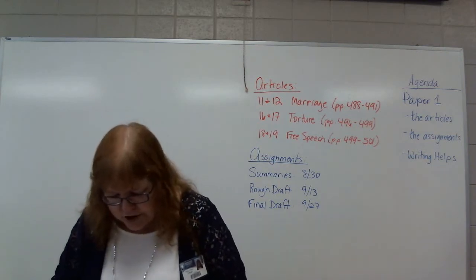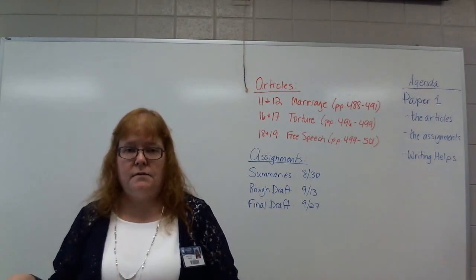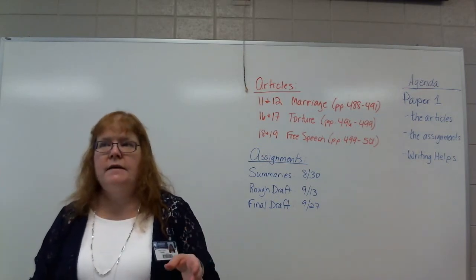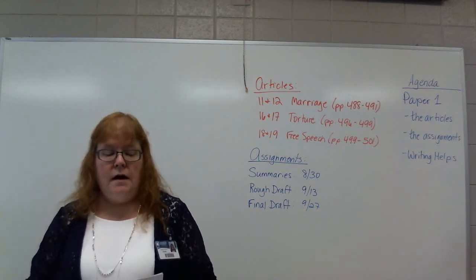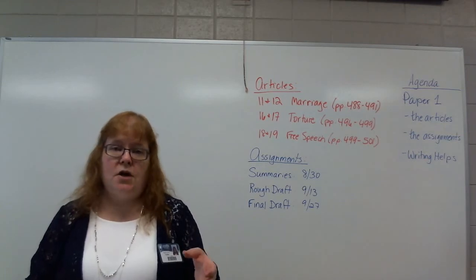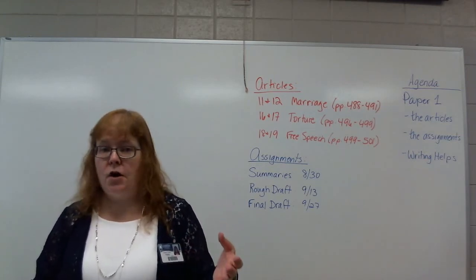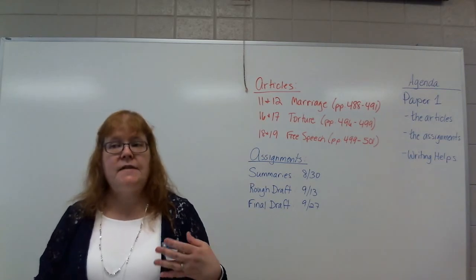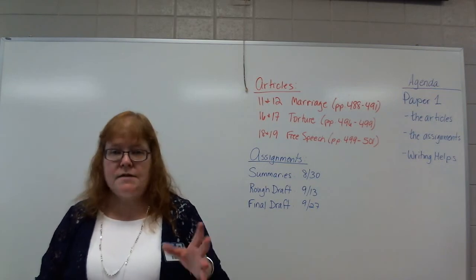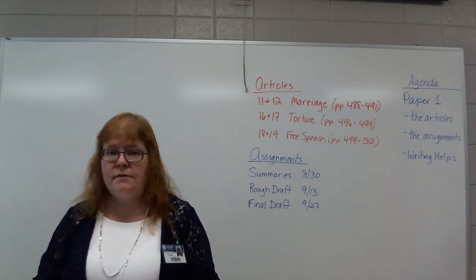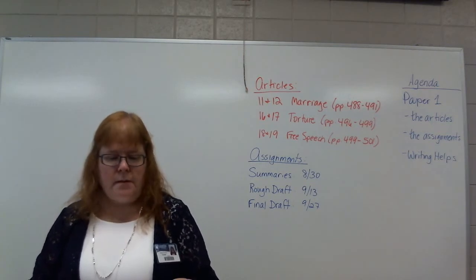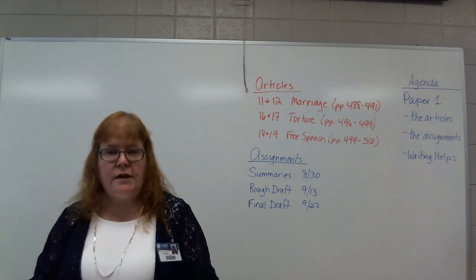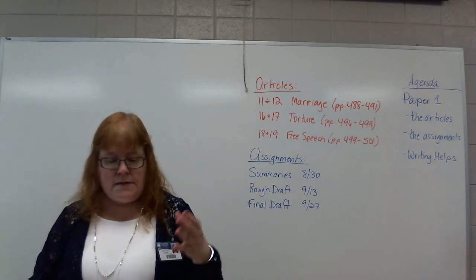Now, if you have the assignment sheet out, great. If you don't, pause me, go get it printed and come back. This particular paper, we're looking at two sides of the same argument. We're trying to figure out which one of these articles does the best job of getting their point across — which one wins the argument from an objective standpoint. That doesn't mean they can't use emotion; it just means that can't be their only thing. And remember, this starts out chapter two stuff — obstacles to critical thinking, group think, self-interest, that kind of stuff. Make sure they're not doing any of that.